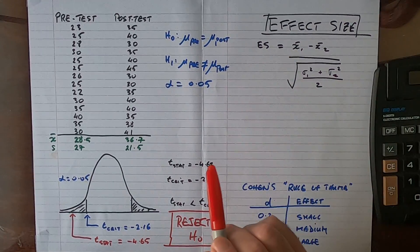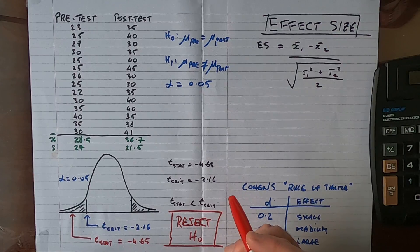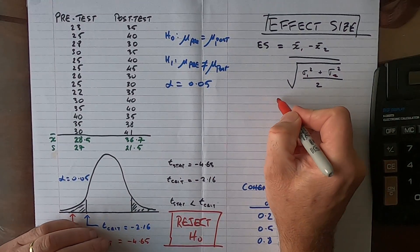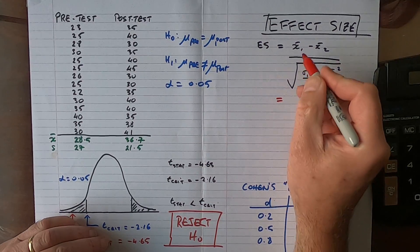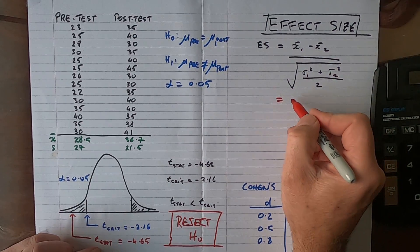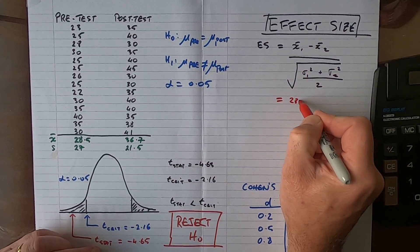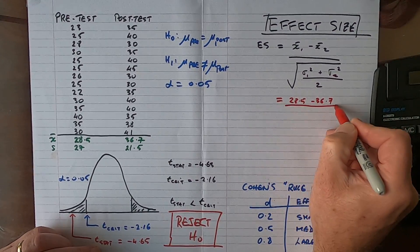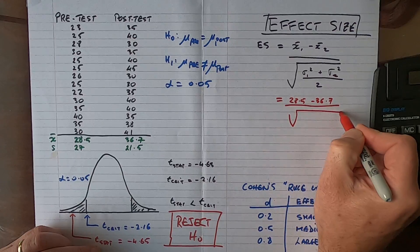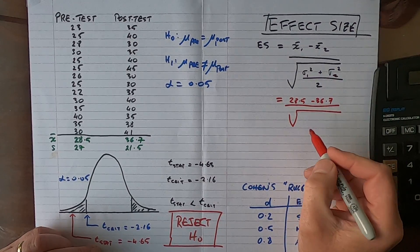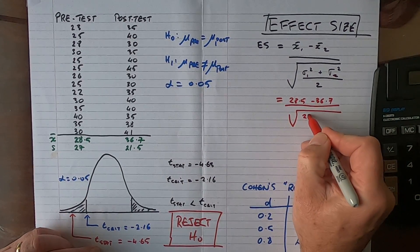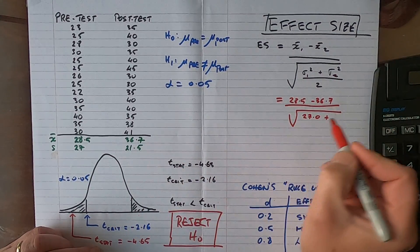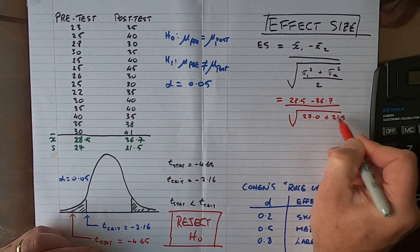Just be aware of that because we're using sample variances instead of population variances, which are unknown. This gives us an estimate of the effect size, but it's a good estimate nonetheless. So let's start plugging in those values. Effect size is equal to the two sample means minus each other, so that's 28.5 minus 36.7, divided by the square root of variance for group 1, which is 27.